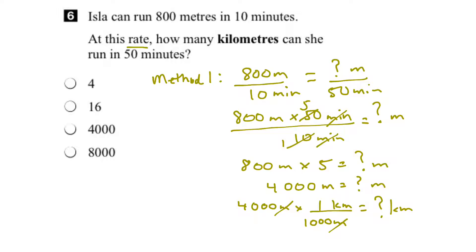I can also put 4,000 over 1 in fraction form and that won't change its value. And then I noticed that 1,000 goes into itself once. 1,000 goes into 4,000 four times. And so my unknown number of kilometers is 4. So if you run 800 meters in 10 minutes and continue at the same rate, you will run 4 kilometers in 50 minutes. So it looks like the first option is the right answer. But let's try another method.